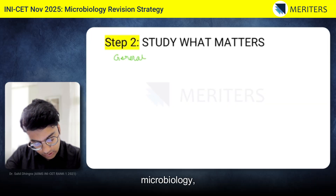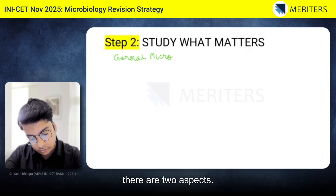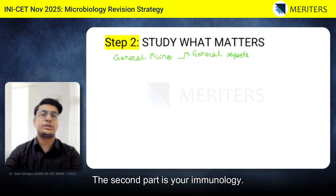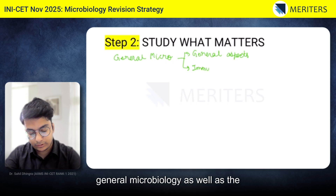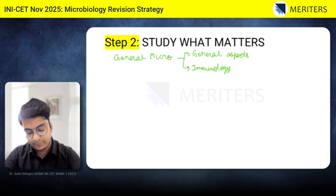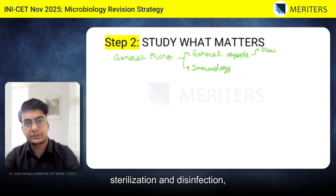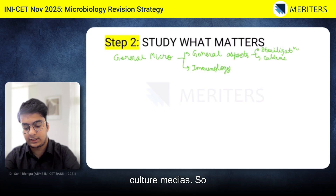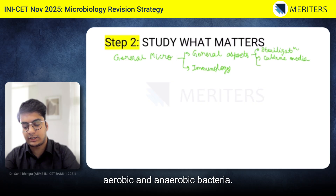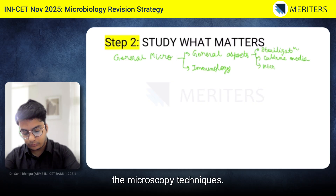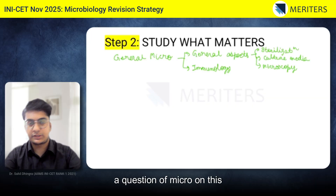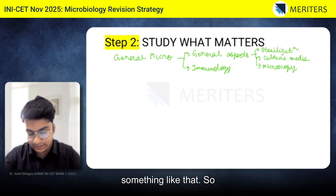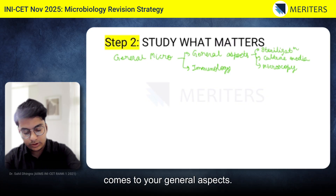When it comes to general microbiology, there are two aspects: the general aspects of microbiology and immunology. In the general aspects, the most important topics are sterilization and disinfection, followed by culture media — the different culture medias for aerobic and anaerobic bacteria. Then, microscopy techniques. Most of the time in AIIMS they will ask a question on this topic — phase contrast microscopy or dark field microscopy. These are the important topics when it comes to your general aspects.